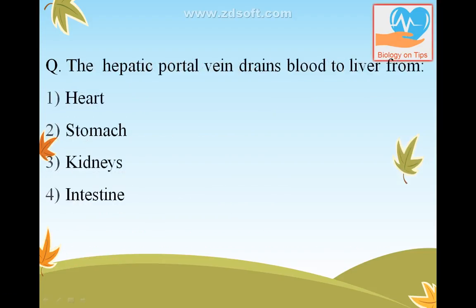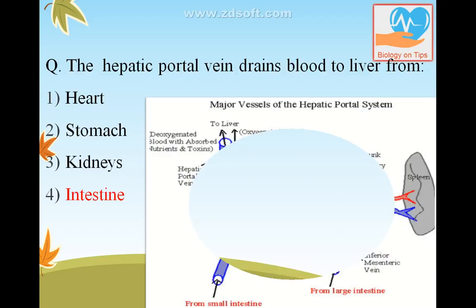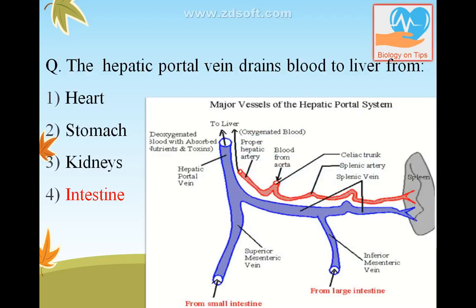The hepatic portal vein brings blood to the liver from the small intestine. You can see in the diagram how it carries the blood.